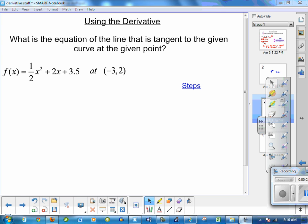Here we're going to put the derivative to work in a classic derivative problem. What is the equation of the line that is tangent to the given curve at the given point? The function here is f(x) = (1/2)x² + 2x + 3.5, and we're talking about a very specific point on the curve of (-3, 2).